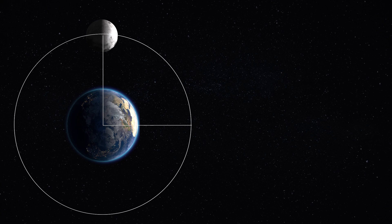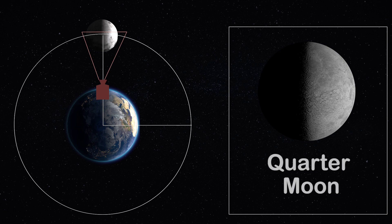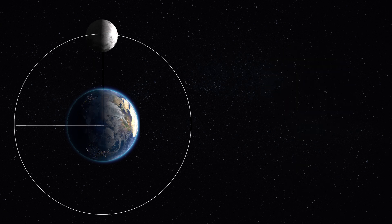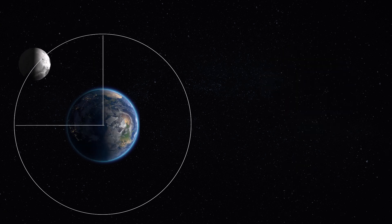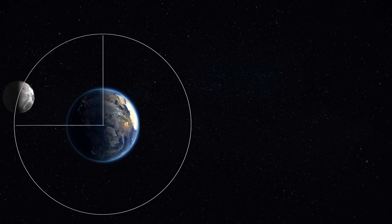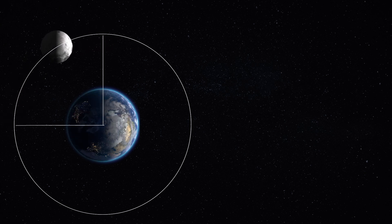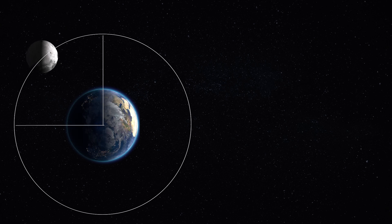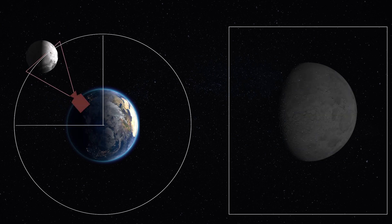When the Moon completes one quarter of its revolution around the Earth it reaches this position — we call it quarter moon because it has completed one quarter of the complete revolution around the Earth. When the Moon moves further, its shape changes and it becomes a gibbous shape. Gibbous means something like that of a convex.